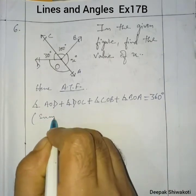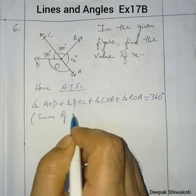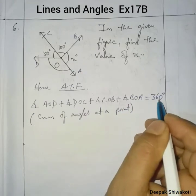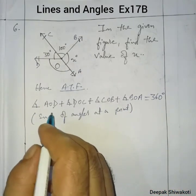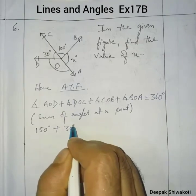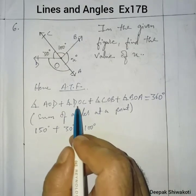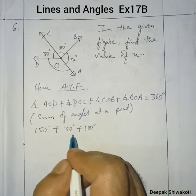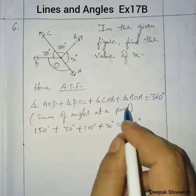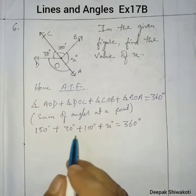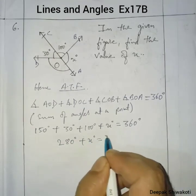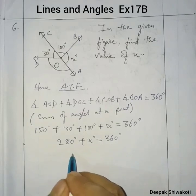The reason is that the sum of angles at a point is 360 degrees. The value of angle AOD is 150 degrees, plus 30 degrees, plus 100 degrees — these values from the figure — plus x degrees equals 360 degrees. Adding these known angles gives 280 degrees plus x equals 360 degrees.